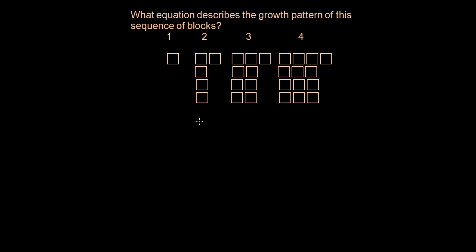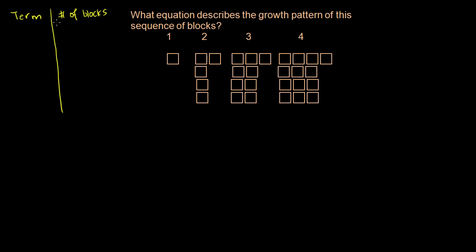Let's look at this pattern. For our first term in the sequence, our first pattern of blocks, we just have one block. So the term is 1, and the number of blocks is 1.